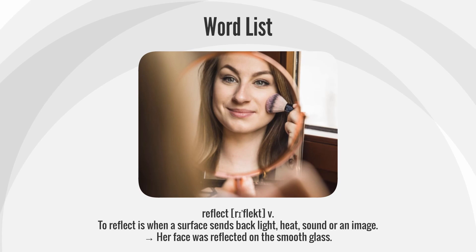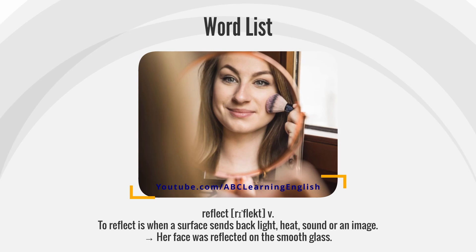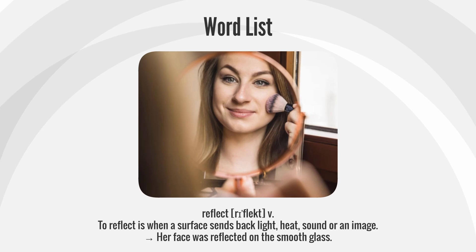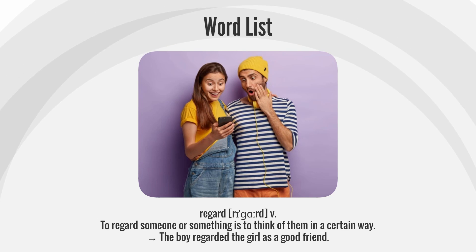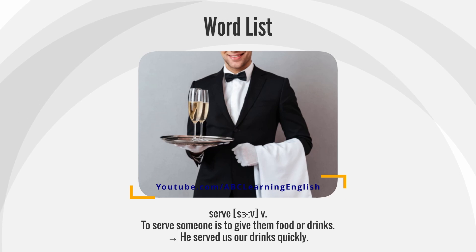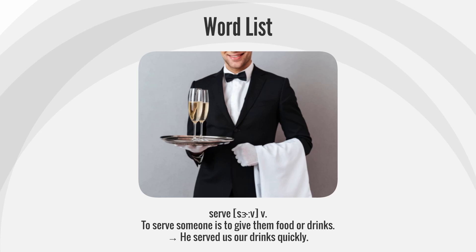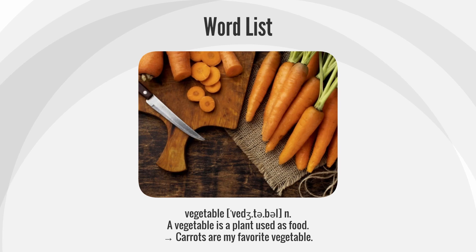Reflect: To reflect is when a surface sends back light, heat, sound, or an image. Her face was reflected on the smooth glass. Regard: To regard someone or something is to think of them in a certain way. The boy regarded the girl as a good friend. Serve: To serve someone is to give them food or drinks. He served us our drinks quickly. Vegetable: A vegetable is a plant used as food. Carrots are my favorite vegetable.